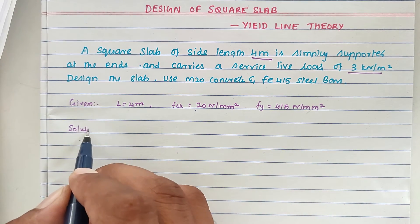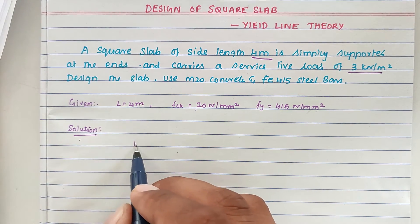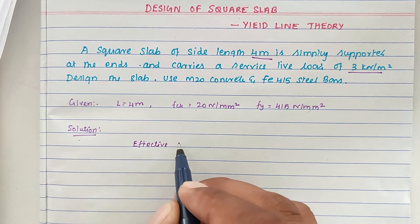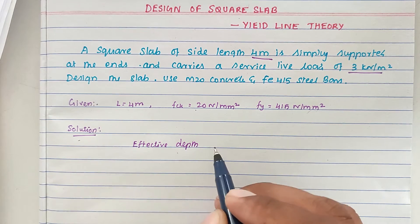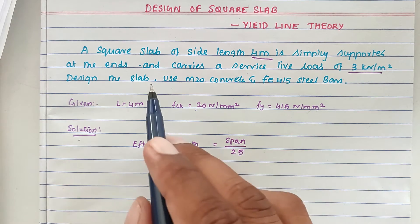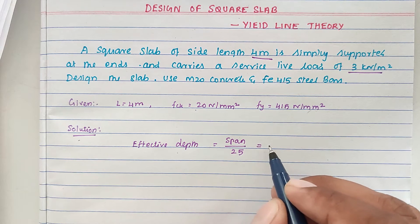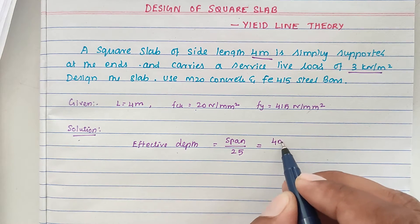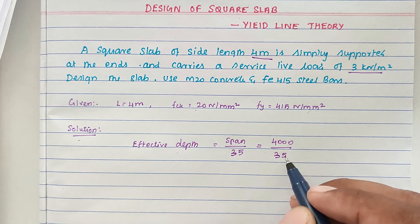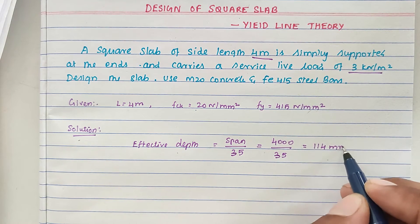First, we find the effective depth of the slab. Effective depth equals span divided by 35 — since this is a simply supported slab, we use span/35. So 4000 divided by 35 gives us a value of 114 mm.